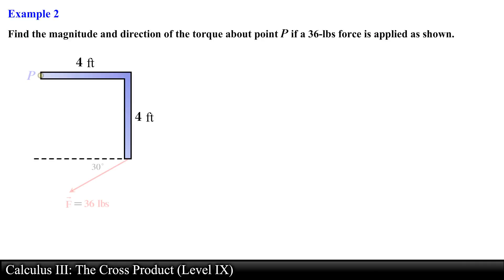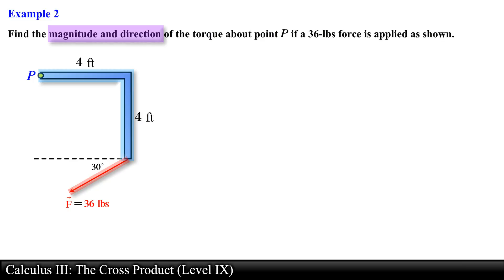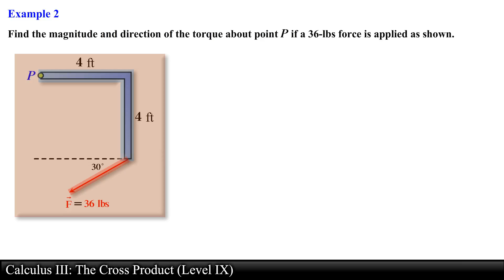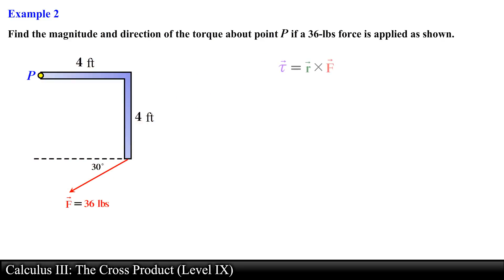Let's try the next example. Find the magnitude and direction of the torque about point P if a 36-pound force is applied as shown. We have a rigid body in the shape of an L and a force of 36 pounds is applied at an angle of depression of 30 degrees at one end. Notice that the rigid body and the force vector F are all located in the same plane, so the torque vector is going to be orthogonal to this plane — it will either point into the page or out of the page.